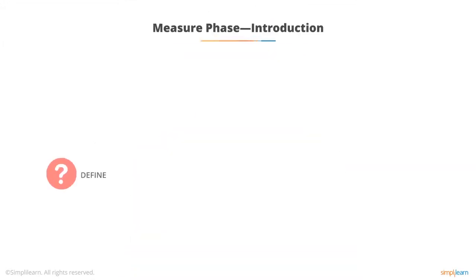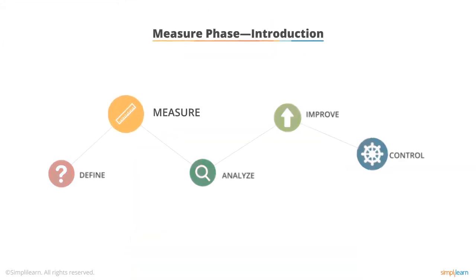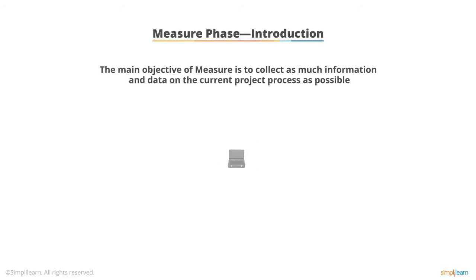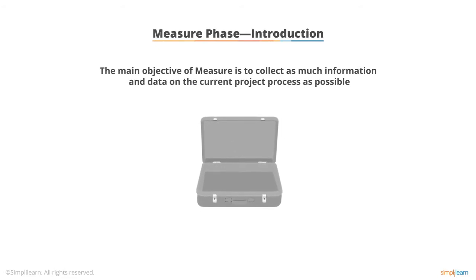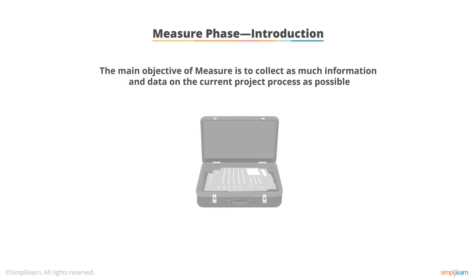Welcome to the Measure phase of Lean Six Sigma implementation. The main objective of Measure is to collect as much information and data on the current project process as possible. The purpose is to be able to understand the true impact of the project and accurately determine if the process has improved after solutions are implemented.